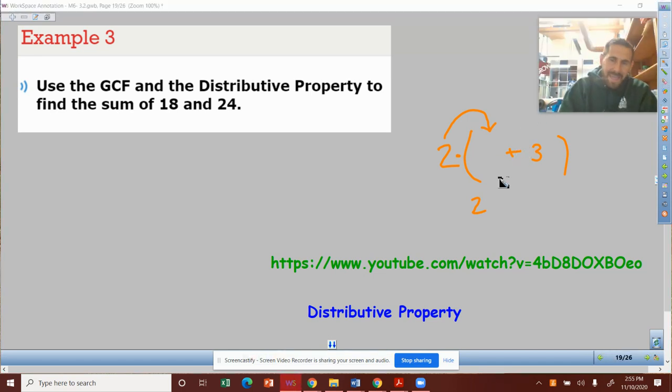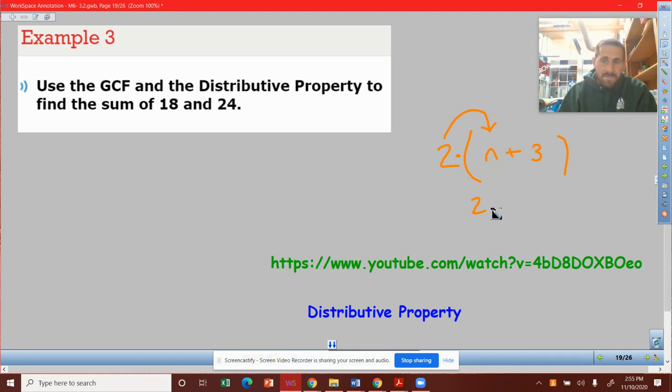I'm going to call it n. So n plus 3. Two times n is 2n, and then we're going to go two times 3. Two times 3 is 6. So this is expanding the distributive property.